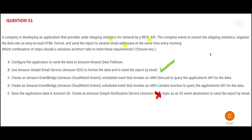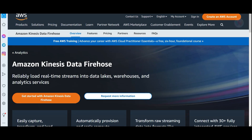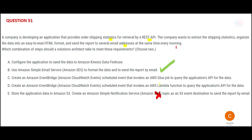Whichever option uses SES is my preferred answer. I will choose SES over SNS because SES is primarily meant for sending emails. I can also mark option E as incorrect because it uses SNS. Now, option A says to configure the application to send data to Kinesis Data Firehose — but Kinesis is about real-time data collection into data lakes, warehouses, and analytics. Our question is not about real-time analytics, so we cross this out.